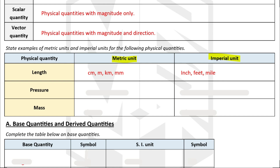For pressure, the metric unit is Pascals, kilopascals, or millimeter mercury, but for the imperial unit we have pounds per square inch. And for mass, the metric unit is grams or kilograms — this is the most commonly used. For the imperial unit, we have pounds and ounce.